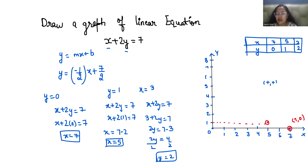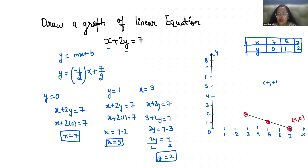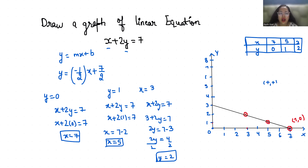Next, whenever x is 3 and y is 2, we plot that point as well. Now we are going to join all these points. This line shows the linear equation x plus 2y equals 7.